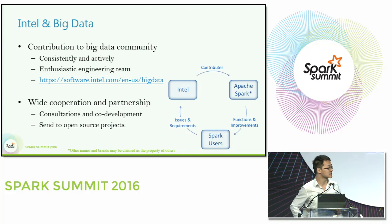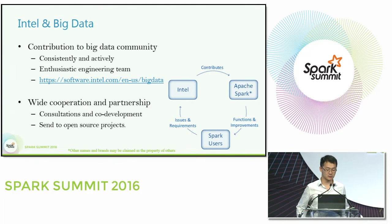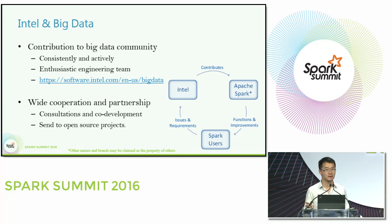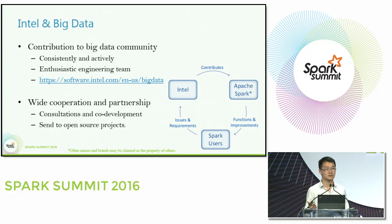We have built wide cooperation and partnership with many great companies in different industries. The typical cooperation pattern is just like the graph on this page: Spark users would leverage the functions and improvements provided by Spark, and during that process they tend to meet issues or have new requirements. That's when they come to us, and we provide consultation and code development. After features are developed, tested, and benchmarked, we pick the best parts and contribute them back to open source projects like Apache Spark.